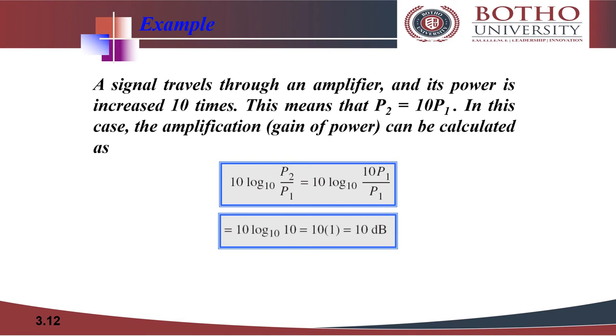So you will see 10 log P2 over P1 to the base 10, which is 10 times log 10 P1 over P1 to the base 10, where P1 gets cancelled. So we have to find the value of log of 10 to the base 10. Log of any number to the same base is equal to 1, so in this case it's 10 times 1 which is 10 decibels. So you will see there is no negative number, which means that it clearly says that there is a gain of power.